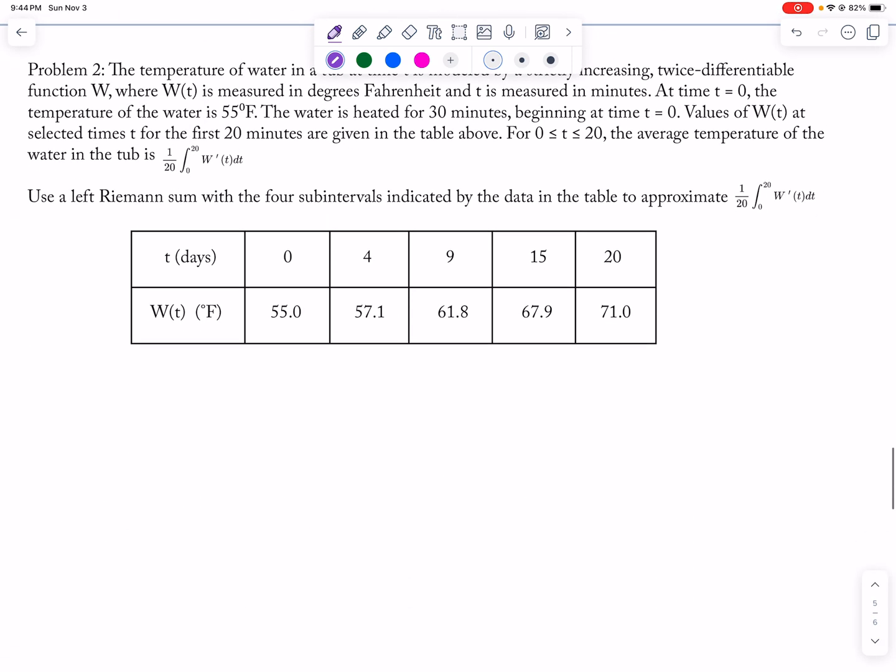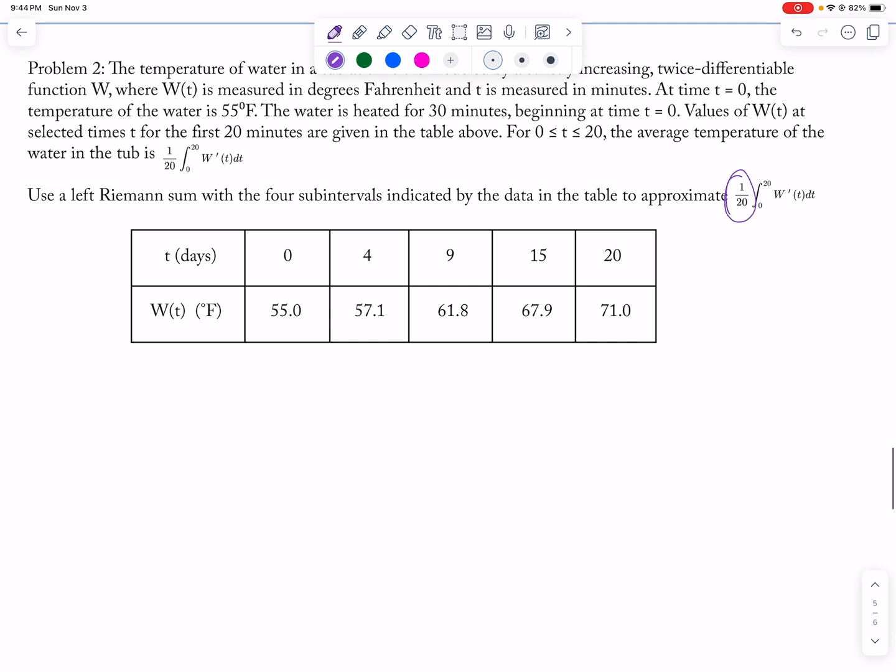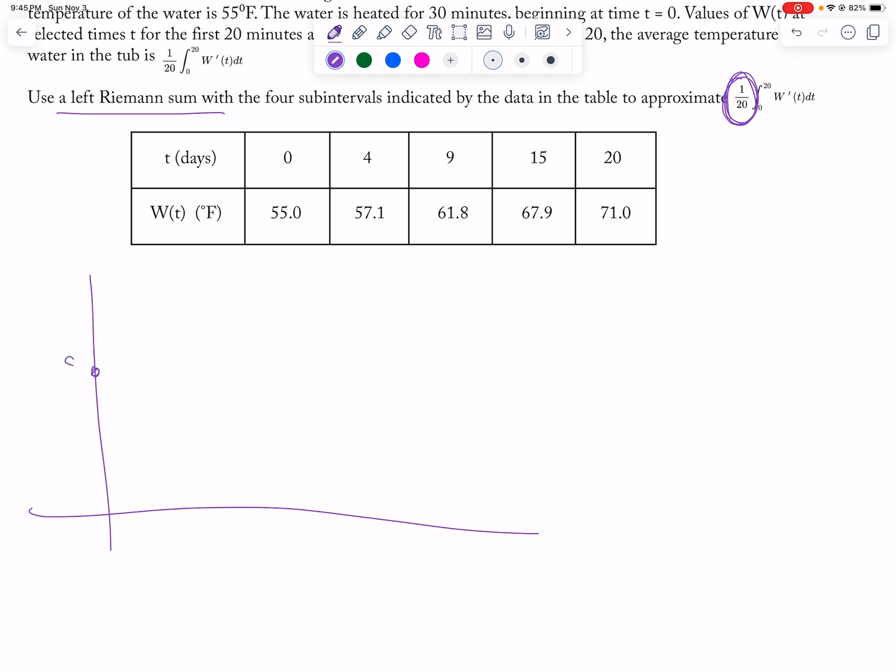And then here you have to multiply by 1 over 20 to get the average value. So I'm doing trapezoid, let's do Riemann sum. So 55, 57.1, 61.8, 15 and 67.0, 67.9, and then 20 and 71.